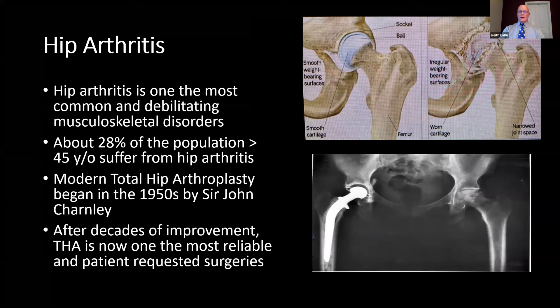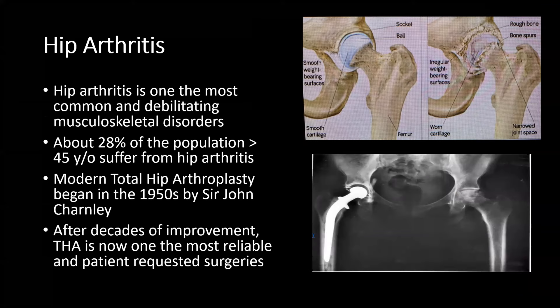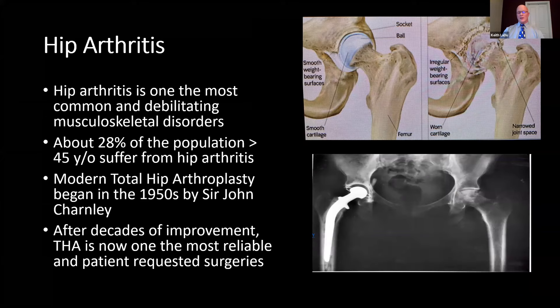Hip arthritis is one of the most common and debilitating musculoskeletal disorders. About 28% of the population greater than 45 years old suffer from hip arthritis. Modern total hip arthroplasty began in the 1950s by a British surgeon, Dr. Sir John Charnley. After decades of improvement, total hip arthroplasty is one of the most reliable and patient-requested surgeries.